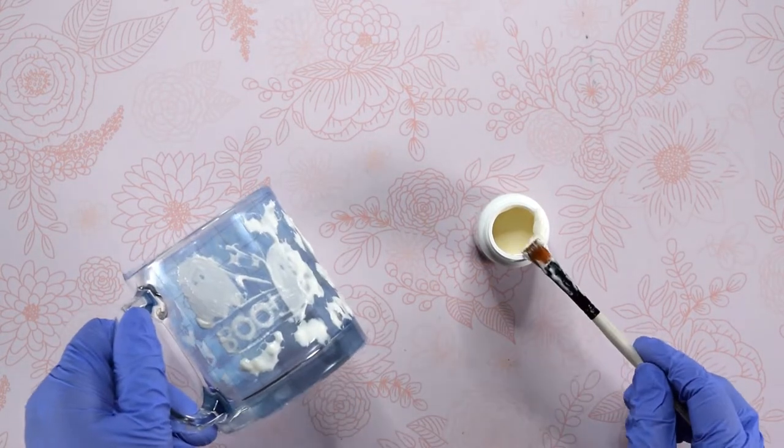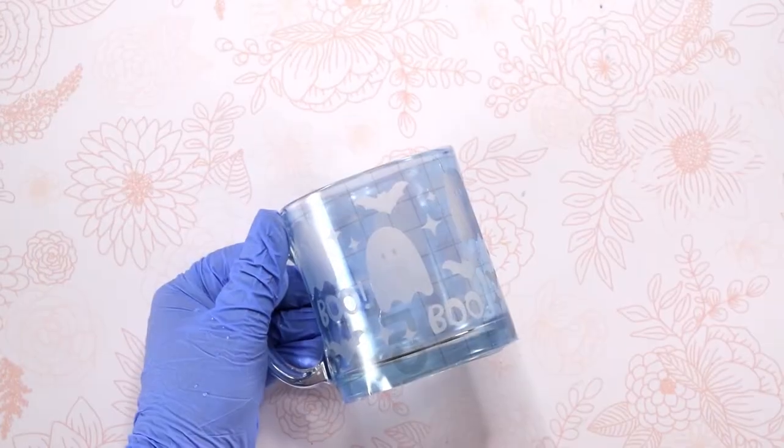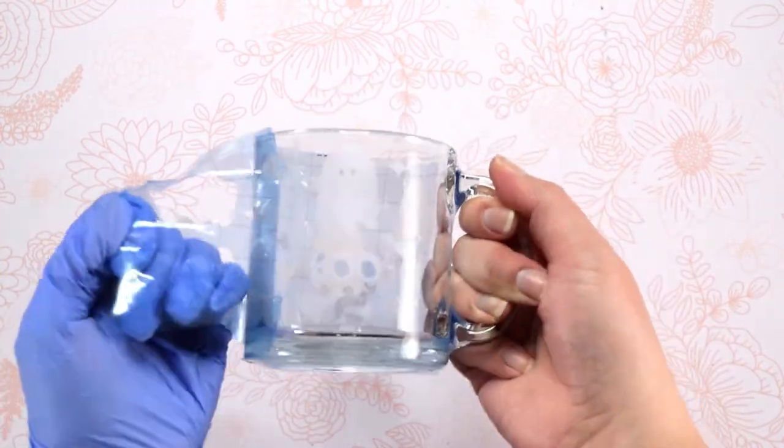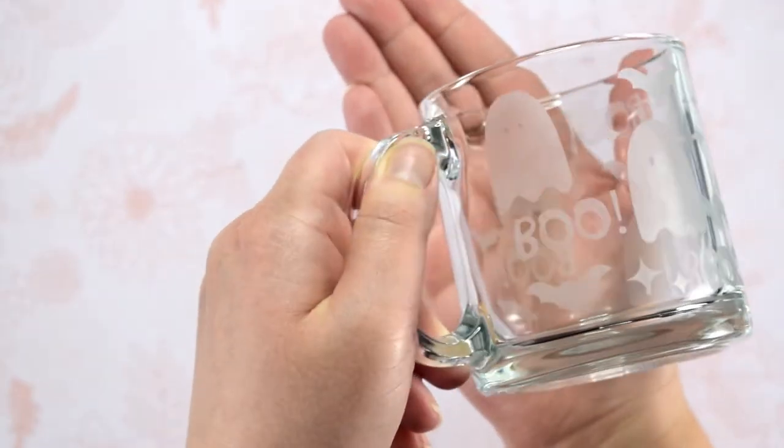Then you can wash off the remaining etching cream with soap and water in the sink. Once all of the etching cream has been washed off, you are ready to remove the stencil vinyl and reveal your new etched mug.